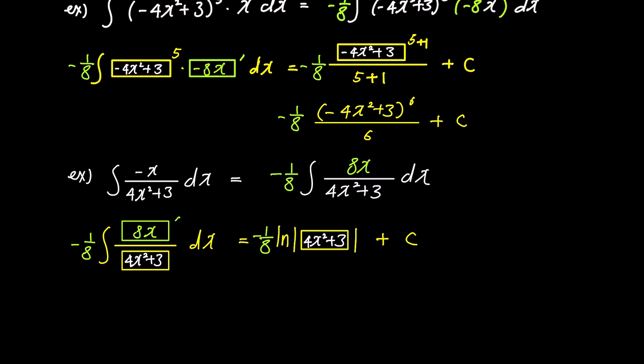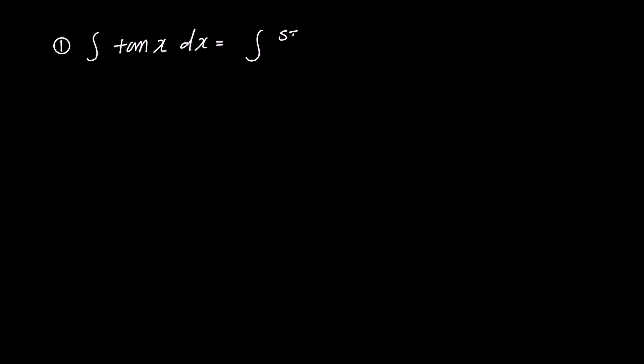Now let's use these three facts to solve problems. The first problem is the integral of tan x dx. Tangent x can be expressed as sin x over cos x, and when we express it this way, the problem becomes the integral of a fraction. Since a fraction integral has come up, we should check if the numerator is in the form of the derivative of the denominator. If we differentiate the denominator cos x, we get -sin x, so by adding a minus sign to the numerator, we achieve the desired form.